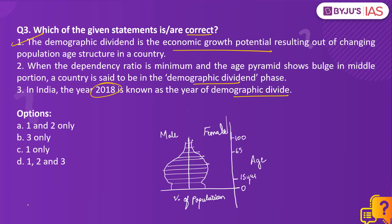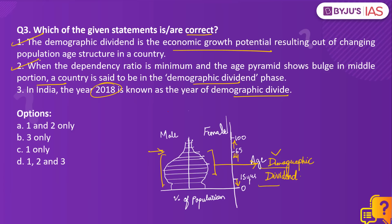Coming to statement number two: looking at the age structure pyramid, when there is a bulge in the middle — that is when the population aged 15 to 64 is greater than those below 15 and above 64 — the country is said to be in a demographic dividend phase. Therefore statement number two is also correct, as when the dependency ratio is minimum and the age pyramid shows a bulge in the middle, the country is in a demographic dividend phase.